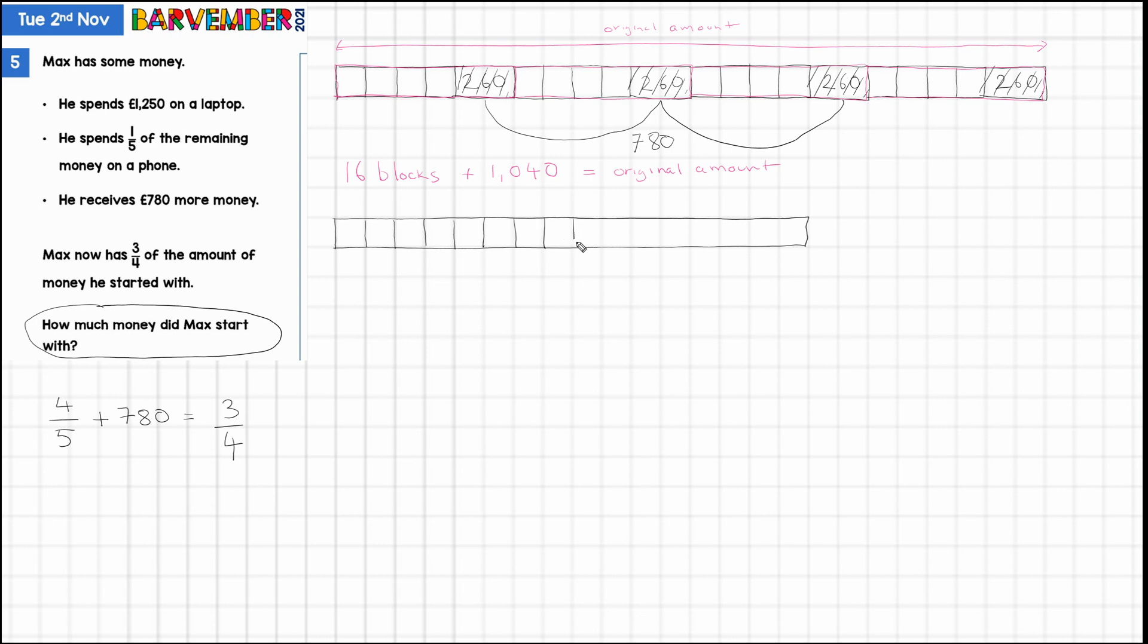Now, remember when I added those, that 780 distributed over the three quarters? It wasn't to scale. So, actually, what I'm going to do is use dotted lines here. This is not to scale. And so, we've got the 16 blocks. And we know that this is 1,040. So, what else do we know? Well, remember we know that one fifth was spent on a phone. Now, remember we have, we distributed those fifths over the three quarters.